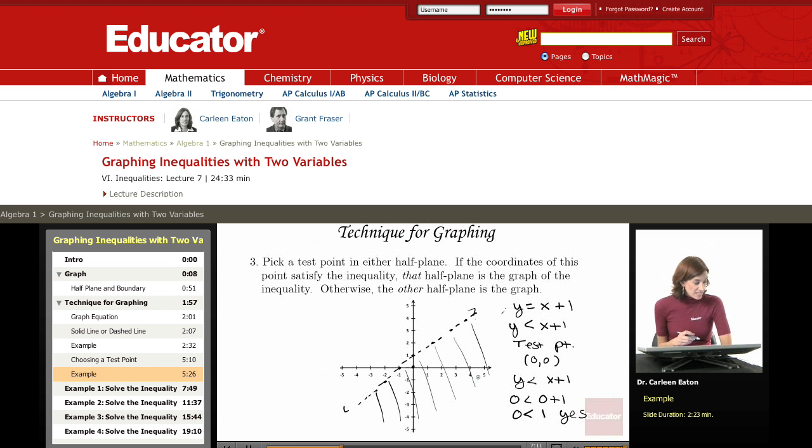So again, if I have an inequality, y is less than x plus 1, I graph my line, y equals x plus 1, which we already did. I used a dashed line because it's a strict inequality. Then I chose a point, and I decided to choose the origin to keep my life very simple and inserted those values into the inequality. So 0 is less than 0 plus 1. 0 is less than 1. That is a true statement that satisfies the inequality. Therefore, the half plane that that test point is in is the correct half plane.